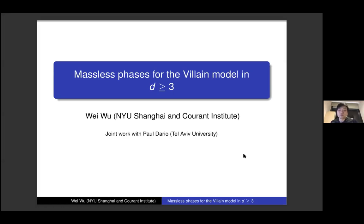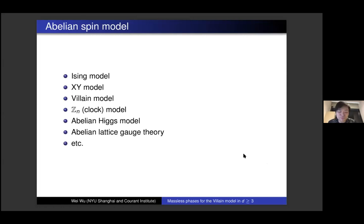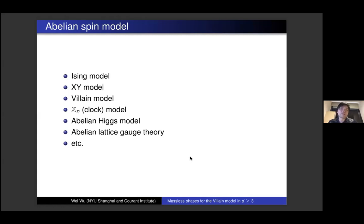The talk is going to be about the Villain model. But let me first mention that it actually belongs to a larger class of models called the abelian spin models, namely spin models where each spin takes value in some abelian group. Other examples include the XY model, the clock model, abelian Higgs model, abelian lattice gauge theory, and so on. Our hope is that the methods we've been working on can also be adapted to this broader class of models.